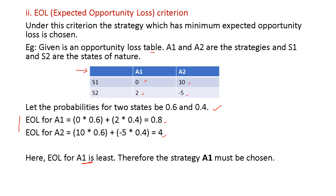EOL for A1 is least, so the decision maker has to select strategy A1 — that is the Expected Opportunity Loss method. If you have a payoff table, you have to find the regret table and then apply the EOL method.